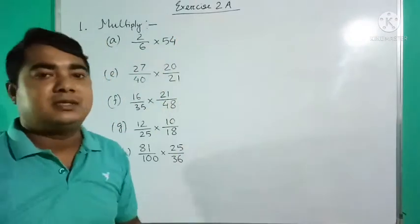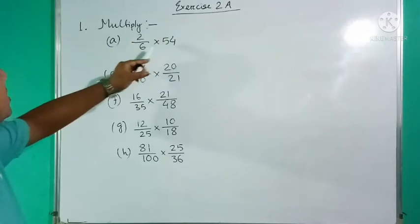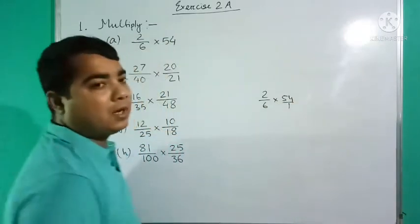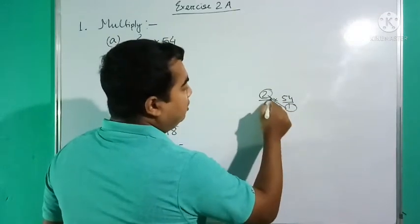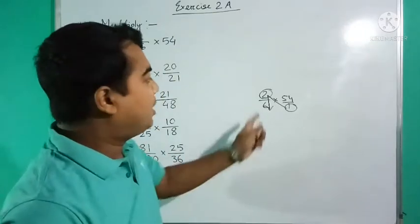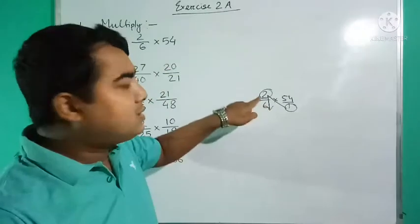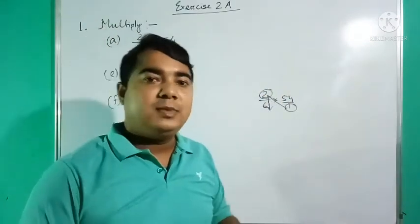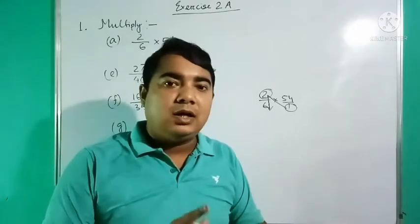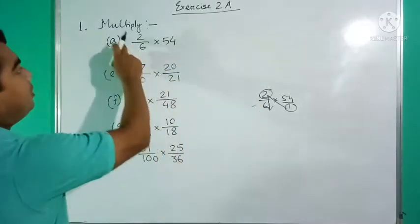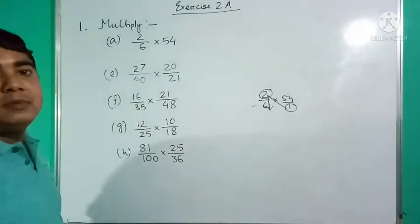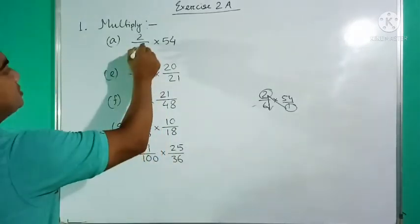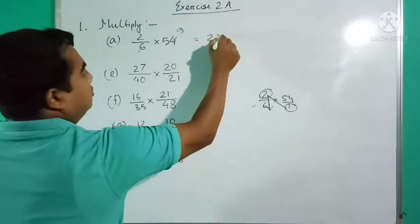Exercise 2a, question number 1a: multiply 2/6 × 54. Here 54 means 54/1. You can cancel numerator with denominator — 6 goes into 54 nine times. So we have 2 × 9, and the answer is 18.